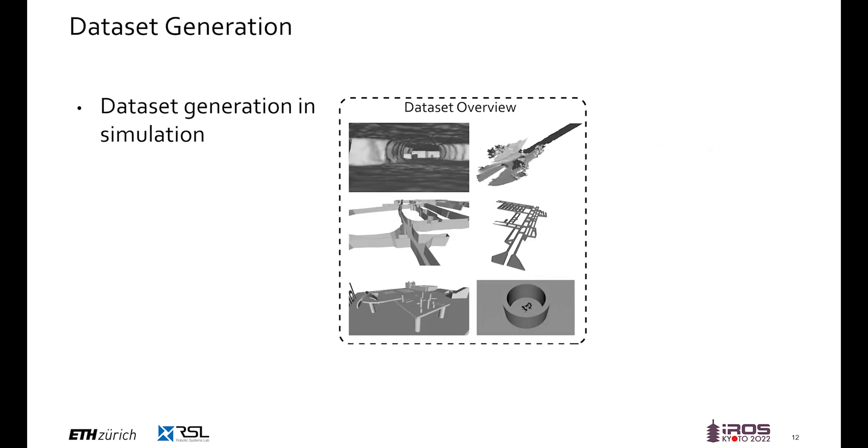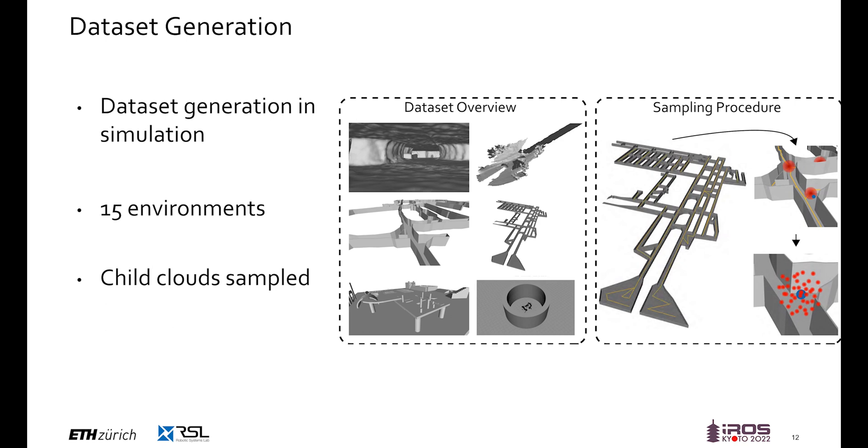In this work, the entire training data is purely generated in simulation. For this, 15 environments are used, which come both from simplified CAD worlds as well as downsampled meshes from real environments. The child clouds here are sampled in simulation exactly according to the procedure introduced before. The parent clouds are sampled along so-called sampling paths, shown by the yellow path in the right image. The orientation and translation with respect to these paths are randomly disturbed.